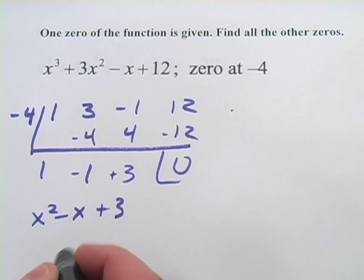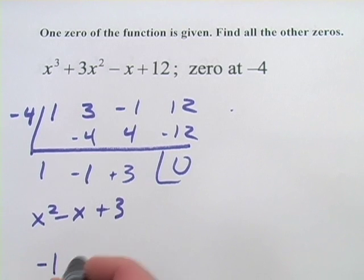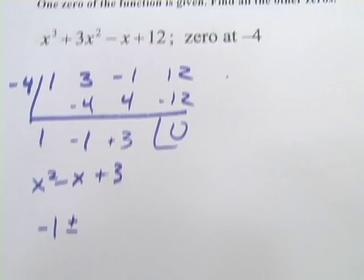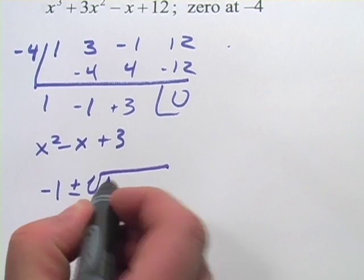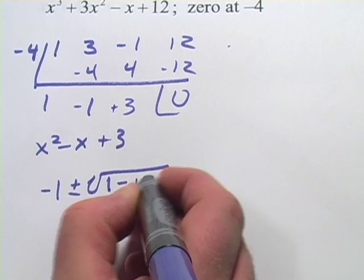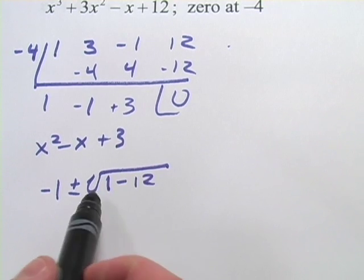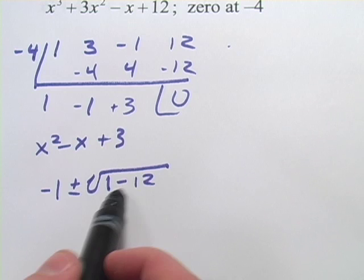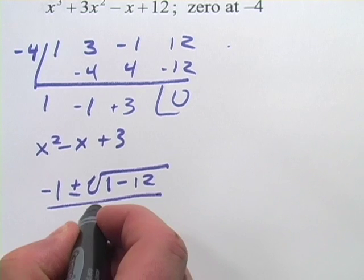It doesn't look like it factors. So we've got negative b plus or minus the square root of b squared minus 4ac, so that's going to be 12. And what you'll notice is we're going to get a negative number under the radical sign here, and this is all over 2a.